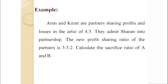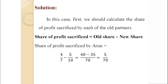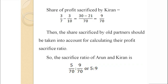For example, Arun and Kiran are partners sharing profit and losses in the ratio of 4:3. They admit Sharon into partnership. The new profit sharing ratio of the partners is 5:3:2. Calculate the sacrifice ratio of Arun and Kiran. First, calculate the share of profit sacrificed by each old partner (old share − new share). Share sacrificed by Arun: 4/7 − 5/10 = 5/70. The share sacrificed by Kiran: 3/7 − 3/10 = 9/70. So the sacrifice ratio of Arun and Kiran is 5/70 : 9/70, that is 5:9. Thank you.